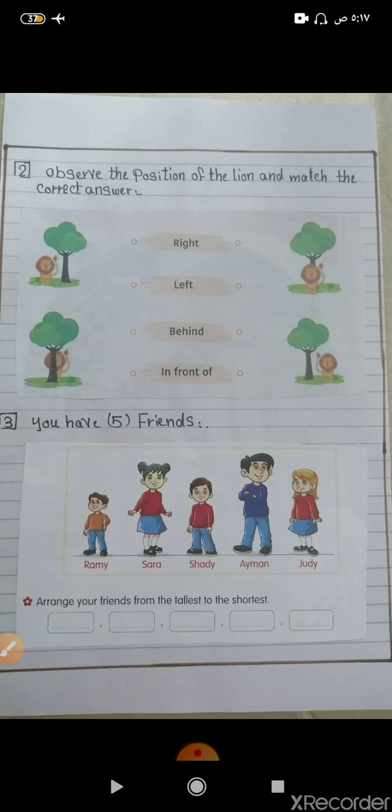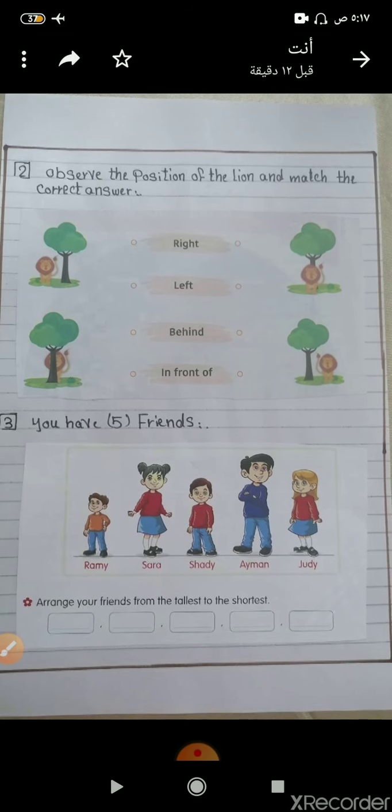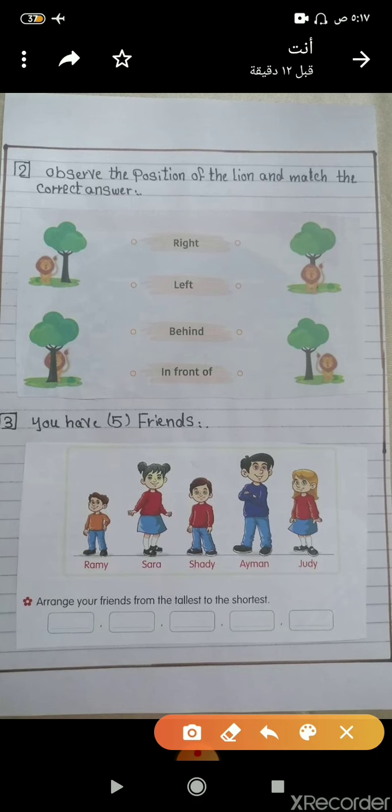Who is the tallest one? Excellent. Ayman is the tallest one. So we write him first - we want the arrangement from the tallest to the shortest. So we write first Ayman. We make a simple cross here to show that we've written him.